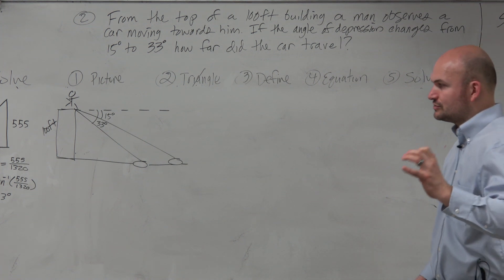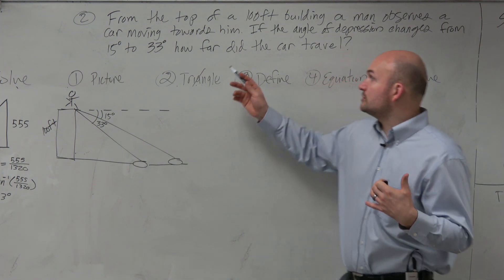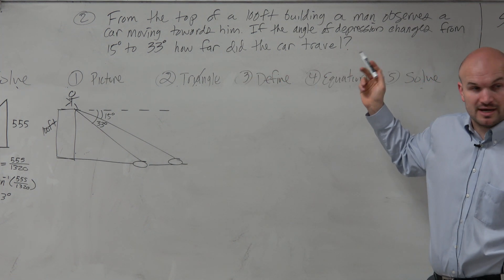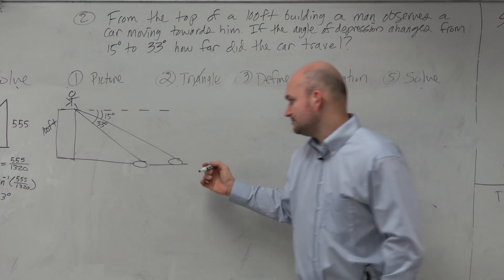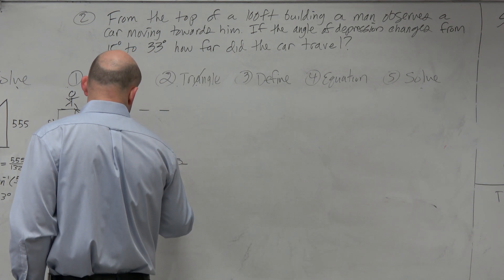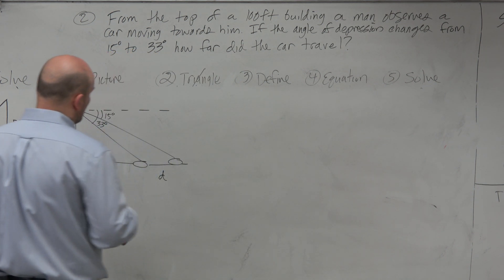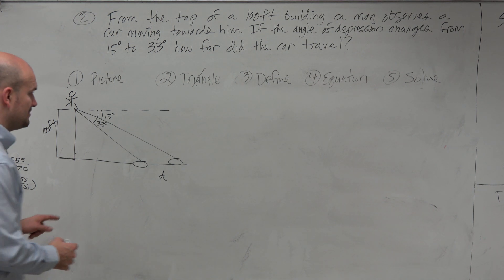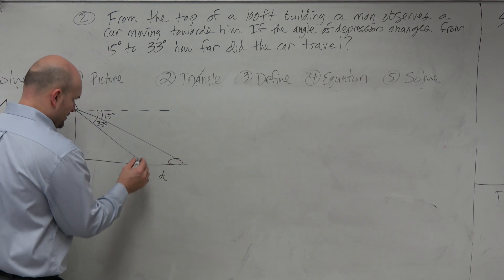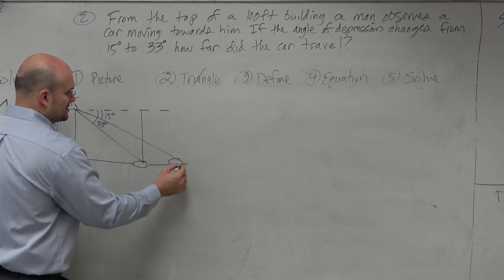Before we extract the triangles, though, what we're trying to look for is we're trying to find the distance that the car traveled, right? OK. So we're basically looking for the distance from here to here. Would you guys not agree? OK. So what I'm going to do is I'm going to create the triangles. I'm going to draw them out. I'm going to draw the triangles with right angles here and here.